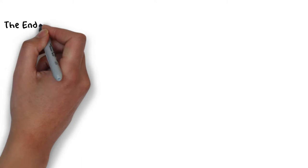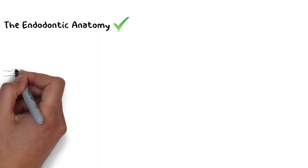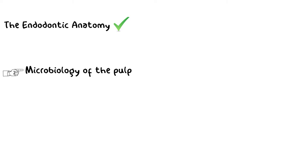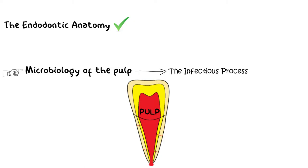Hello and welcome back everyone. In the previous lecture we discussed basic endodontic anatomy, and today we will be starting a new topic: the microbiology of the pulp. Specifically, the infectious microorganisms of the pulp that cause necrosis and infection. In today's lecture we will be talking about how the pulp defends itself from bacteria and how bacteria eventually reach the pulp to establish an infection.